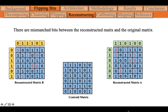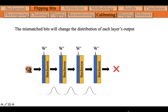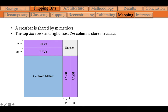Since the bits can only be flipped in the granularity of rows or columns, there will be mismatched bits between the reconstructed matrix and the original matrix, indicated by the red cells. These mismatched bits will change the distribution of each layer's output without any accuracy degradation. We calibrate the neural network by re-executing the forward propagation path to update the batch normalization layer's parameters, so that the output distribution of each layer is still normalized. When deploying the model onto crossbars, we only need to store the centroid matrix and all the metadata. In addition to the column flipping vectors and row flipping vectors, we also store the inverse of the row flipping vectors.